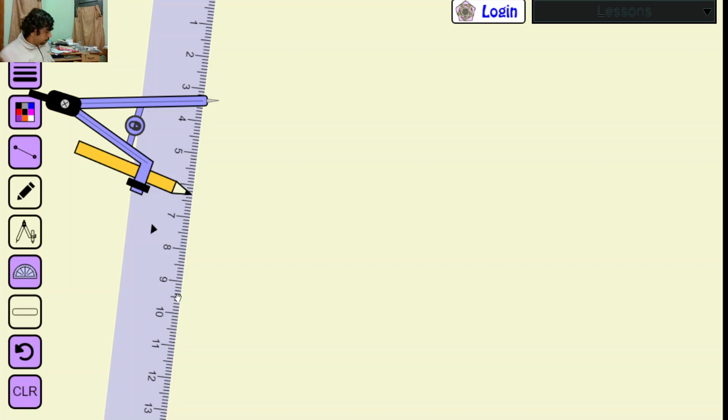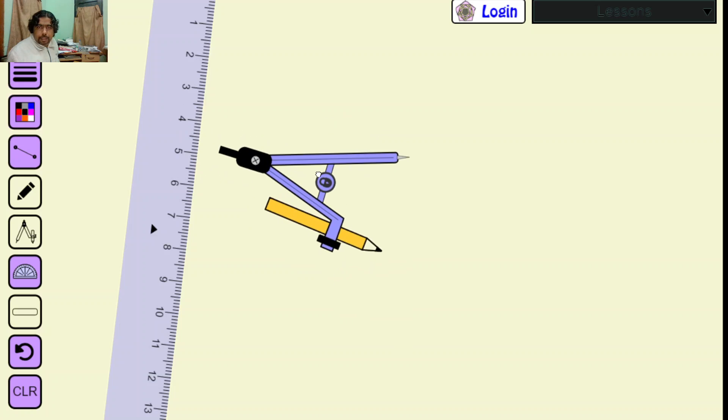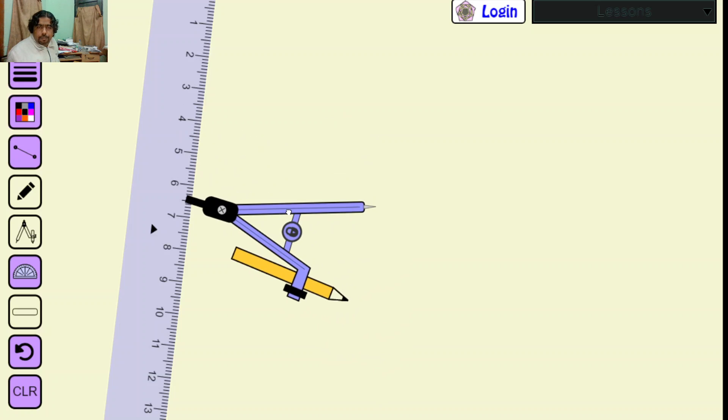In this lecture our objective is to inscribe a regular polygon of any number of sides inside a circle. It may be five, it may be six, depending on what you want. Let us try maybe the pentagon.